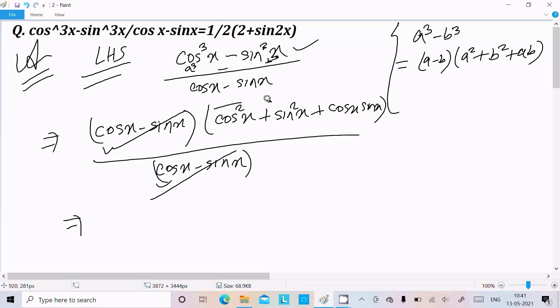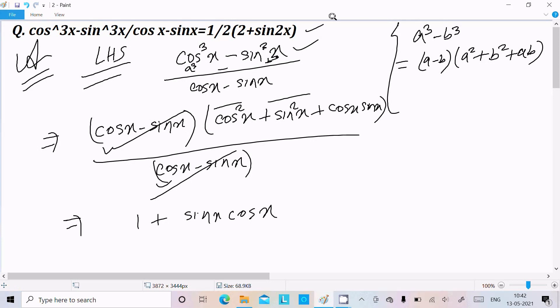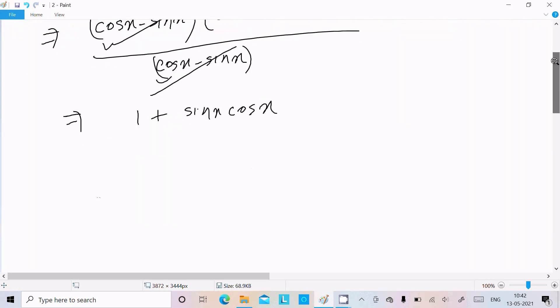Now cos²x plus sin²x, the value is 1. So here 1 plus sinx cosx. But our intention is to make 1 plus sinx cosx equal to something with sin2x. So I am going to multiply 1/2 with numerator and denominator. So here we can write 1 plus sinx times cosx. If I multiply this, this will cancel, nothing will be affected.